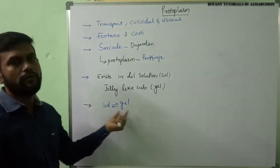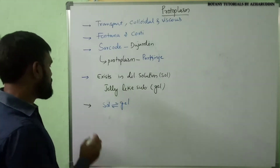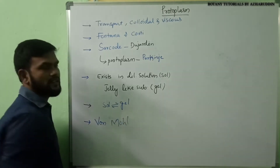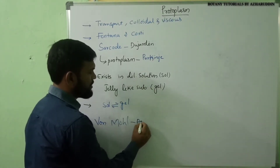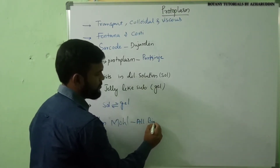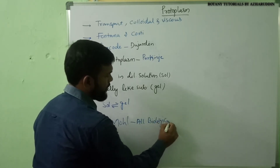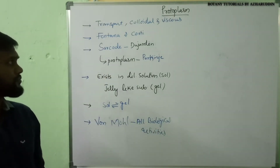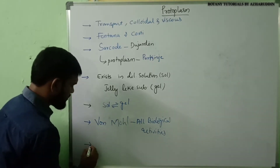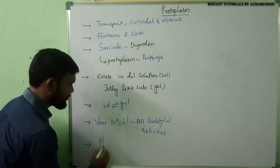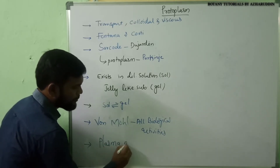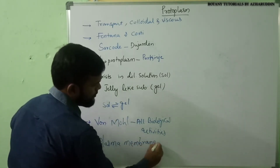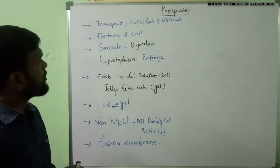One important point: all biological activities occur in the protoplasm. This protoplasm is covered with the plasma membrane — that means protoplasm is present underneath the plasma membrane.